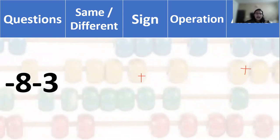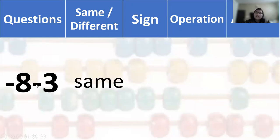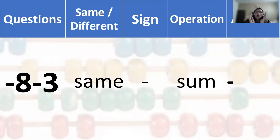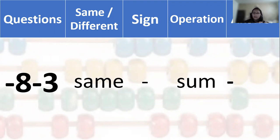Another question: minus 8 minus 3. Same sign or different sign? Same sign. Same sign rule — just look at the numbers: 8 and 3. The sign is minus, so the answer is minus. Same sign operation is sum — 8 plus 3 is going to be 11. Answer: minus 11. Step by step.